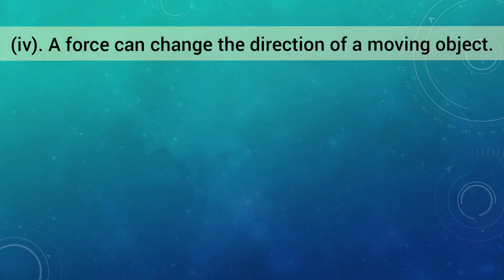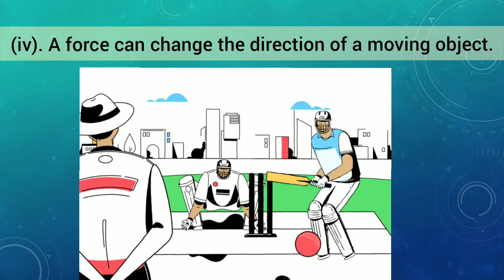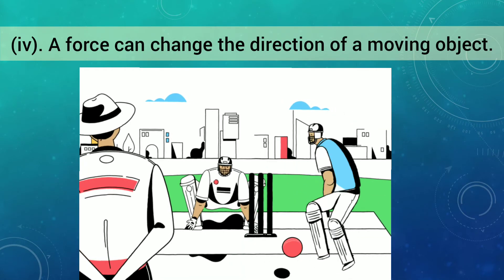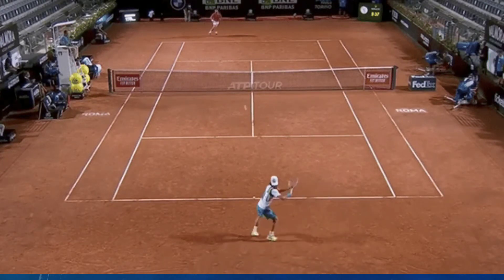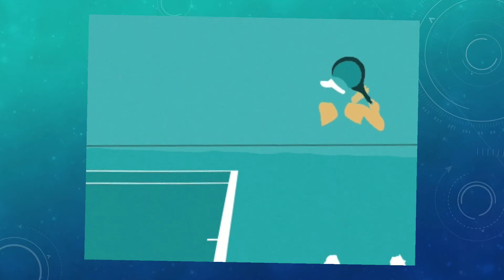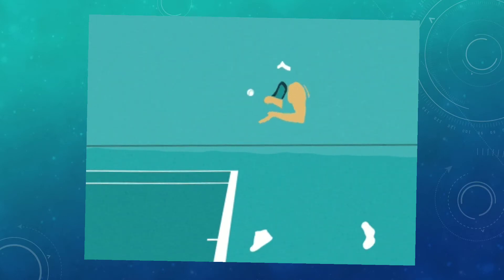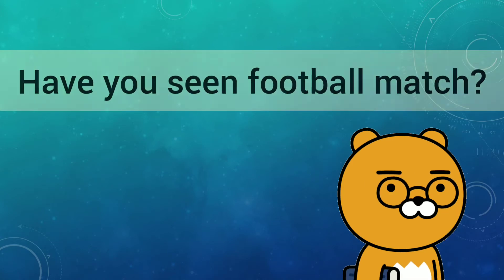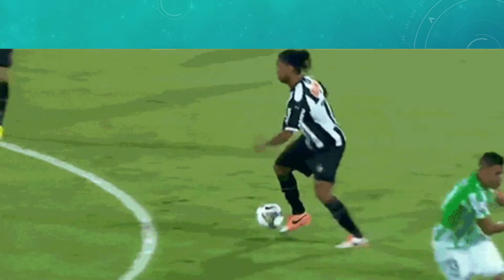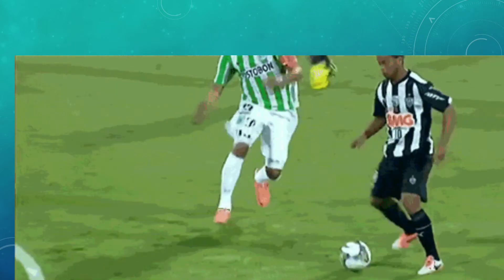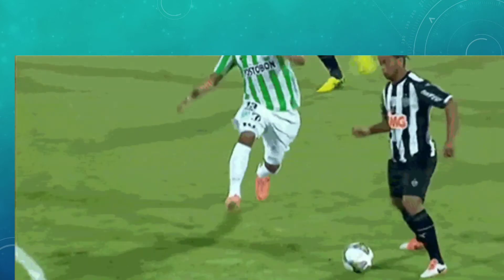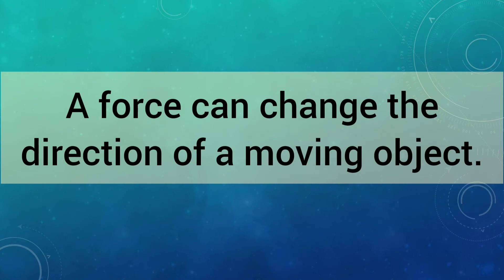Force can change the direction of a moving body. When a batsman hits the ball with his bat, the direction of the moving ball changes. Similarly, when a tennis player returns a service, he or she uses force to change the direction of the ball. A football player kicks the ball to make it move in the desired direction. He can change its direction by kicking the ball. All these examples prove that force can change the direction of a moving object.